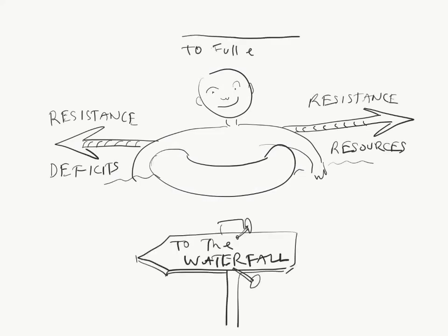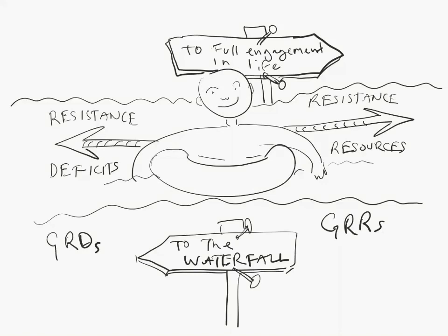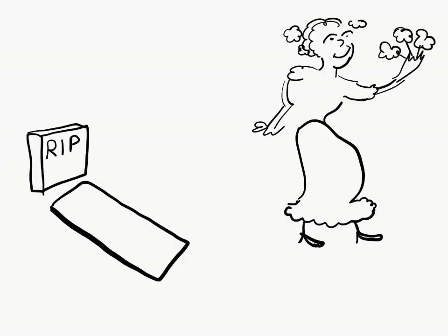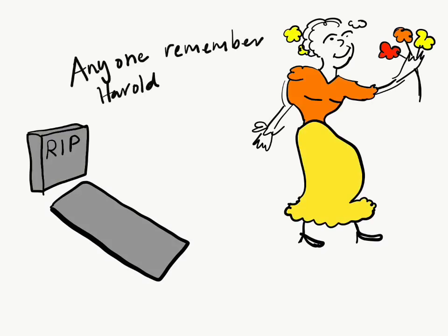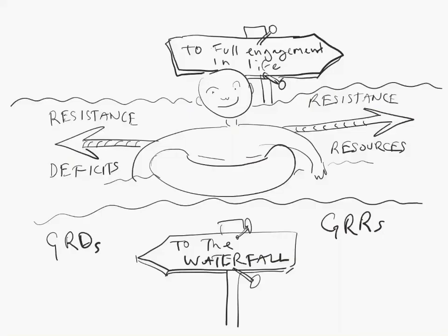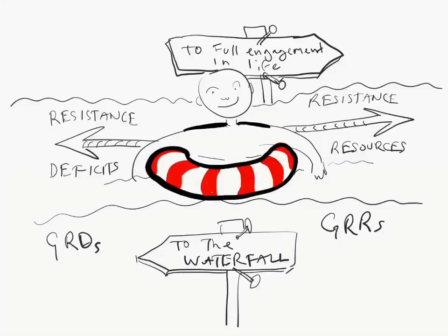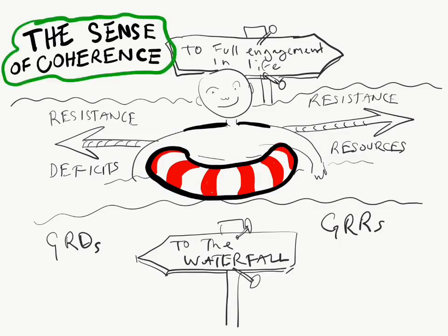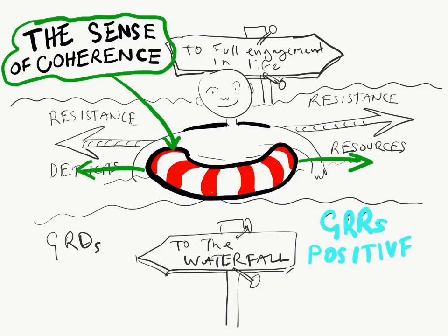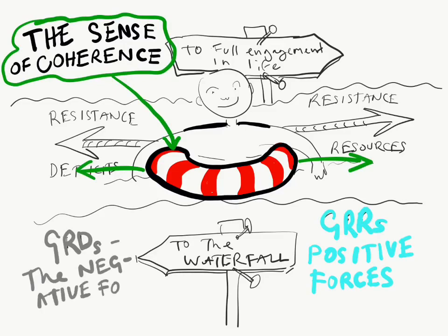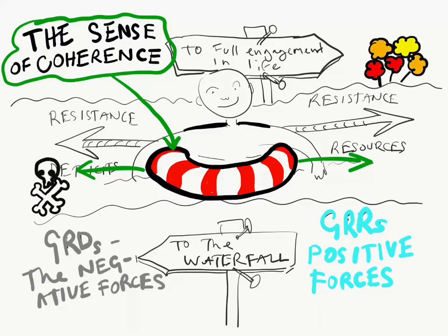So life is like a tug of war between these two opposites, with the abstract notions of death at one end and total engagement with life at the other. The little floating buoy is what's called the sense of coherence, or SOC, the state of relative well-being in suspension between these two opposing positive and negative forces.